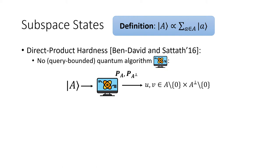It is always easy to obtain either a vector in A or A-perp by measuring the state in either the standard basis or the Hadamard basis. However, measuring one basis will completely collapse the state into a single vector, forcing it to lose all information about the other space. Also note that if the quantum algorithm can make unbounded queries, it can learn the subspace A by making exponentially many queries, so finding these two vectors becomes easy without the query constraint.